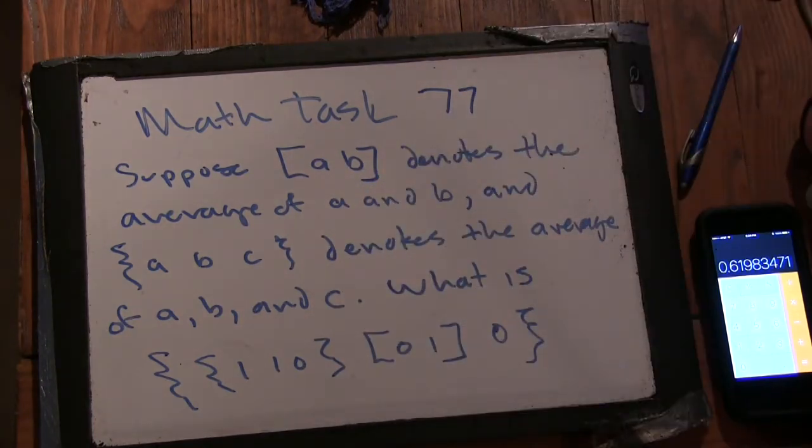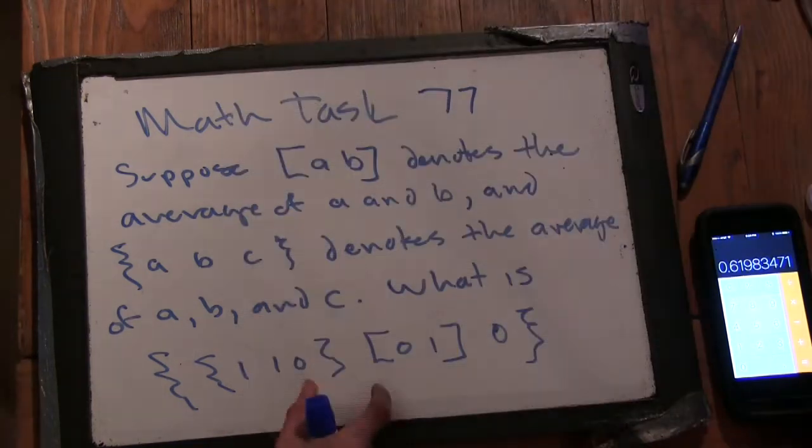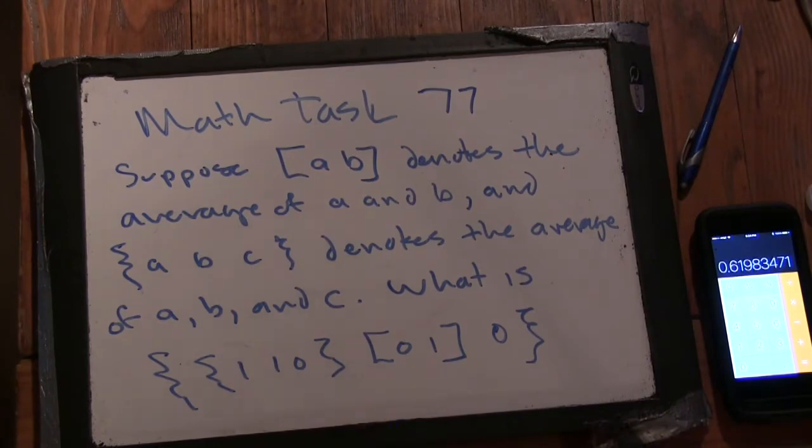So 1, 1, and 0 is the average of them. Yeah. Oh, okay. So we can start by just... We have to evaluate these things first, otherwise it will get kind of complicated.